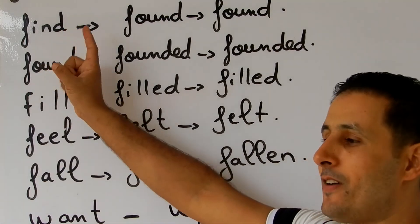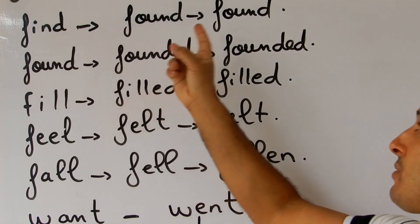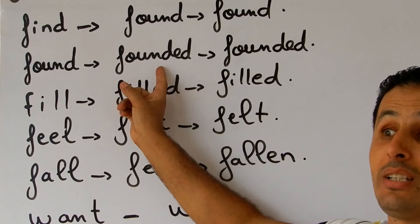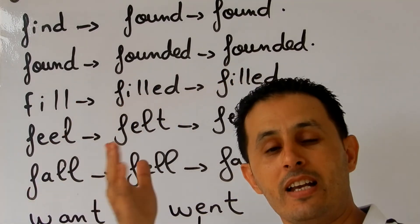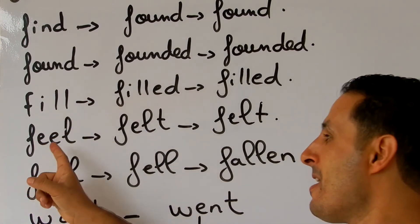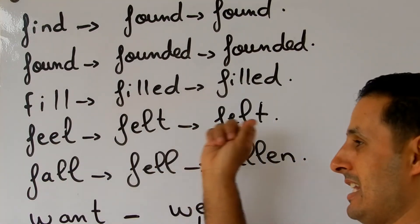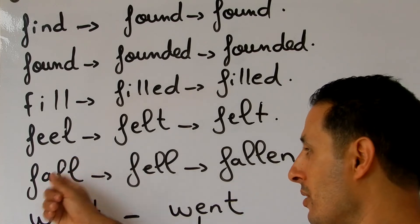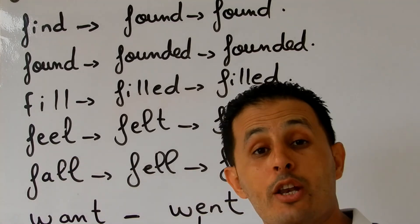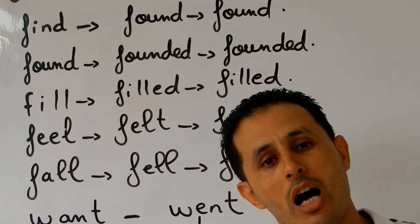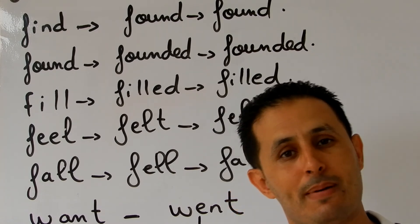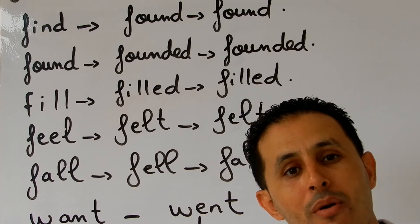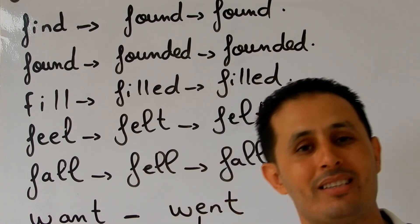Let me summarize: 'find' is an irregular verb, simple past 'found,' past participle 'found.' 'Found' meaning to establish/set up is a regular verb, simple past 'founded,' past participle 'founded.' 'Fill in the blanks' — regular verb, simple past 'filled.' 'Feel' — simple past 'felt,' past participle 'felt.' 'Fall' — simple past 'fell,' past participle 'fallen.' 'Want' is a regular verb, simple past and past participle 'wanted.' And 'went' is the simple past of 'go.'